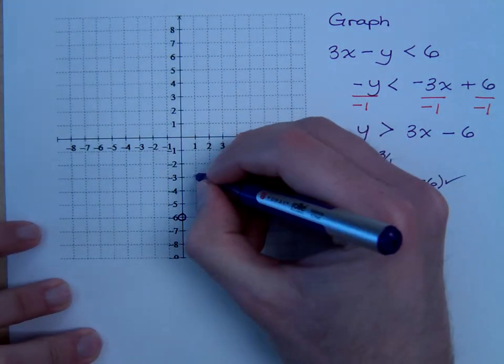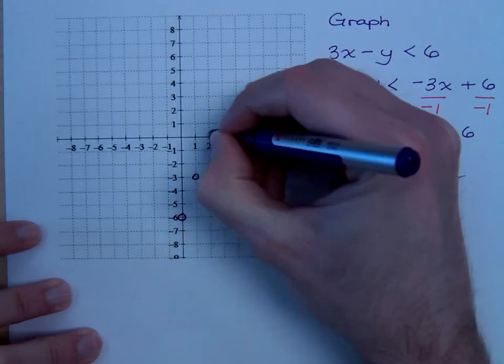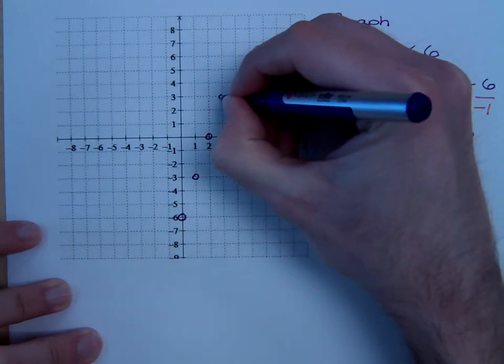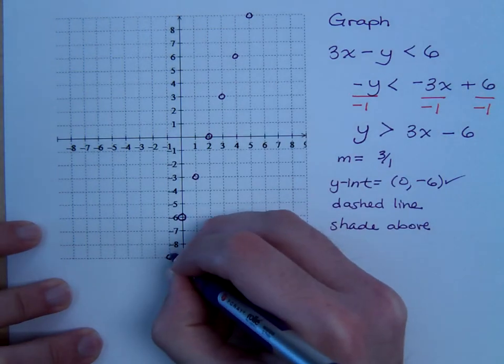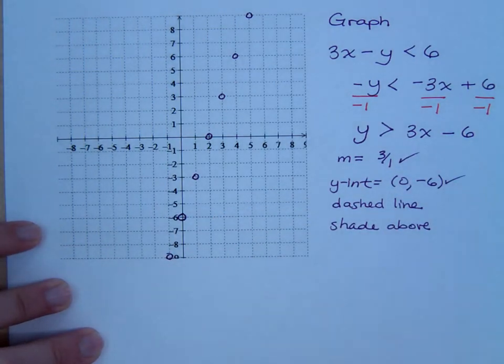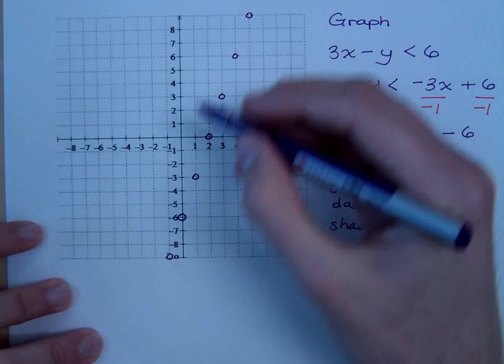My slope is 3 over 1. It's positive, so I'm going up. 3 over 1.